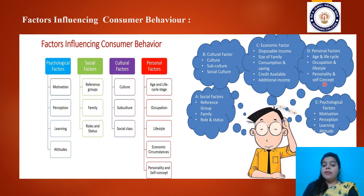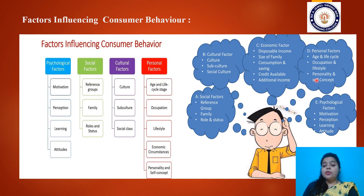Personality and self-concept means how you present yourself, what your attitude is, what types of behavior, skills, and knowledge you have, and what you have learned from your surroundings and family — all together forming your behavior pattern and drawing your personality. That personality itself brings consumer behavior. For example, some people always prefer formal dresses, reflecting their personality, while others always go for casual non-branded dresses. So if you go for a party you prefer party attire, and for formal places like schools, colleges, or offices you prefer formal dresses — your self-concept shapes your consumer behavior.